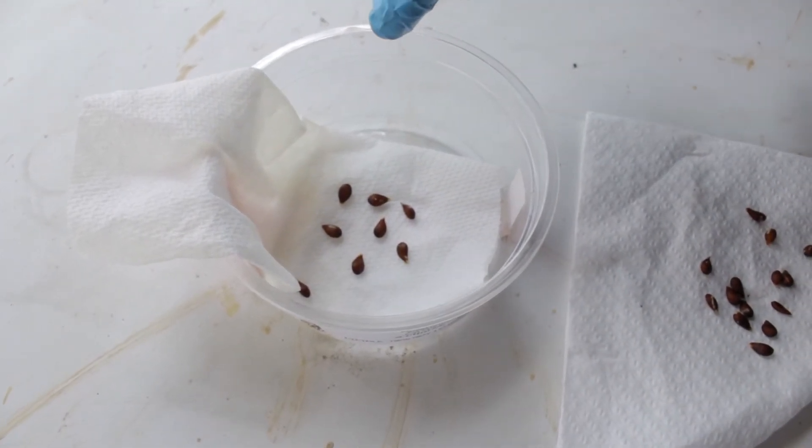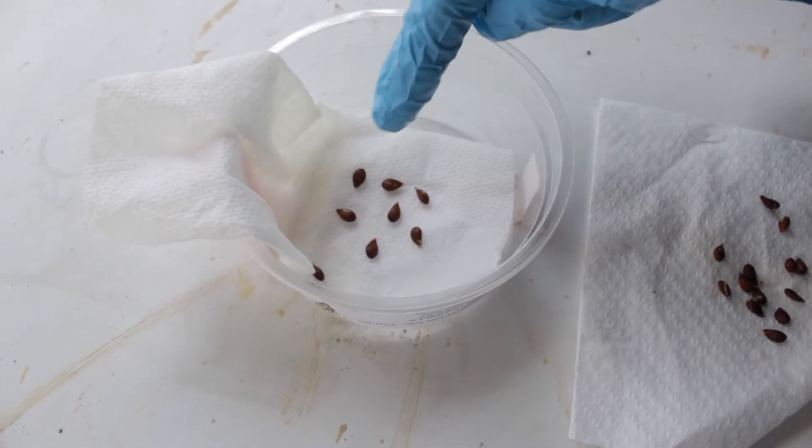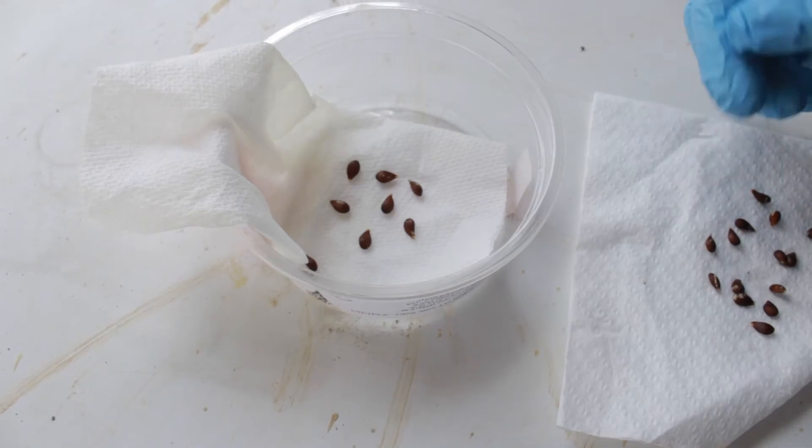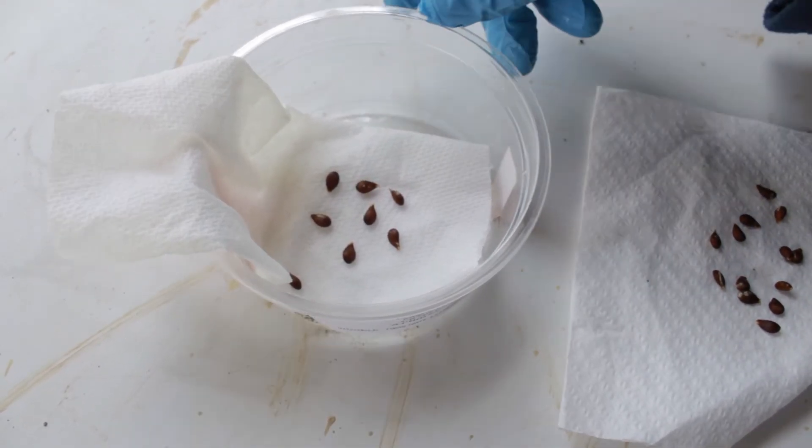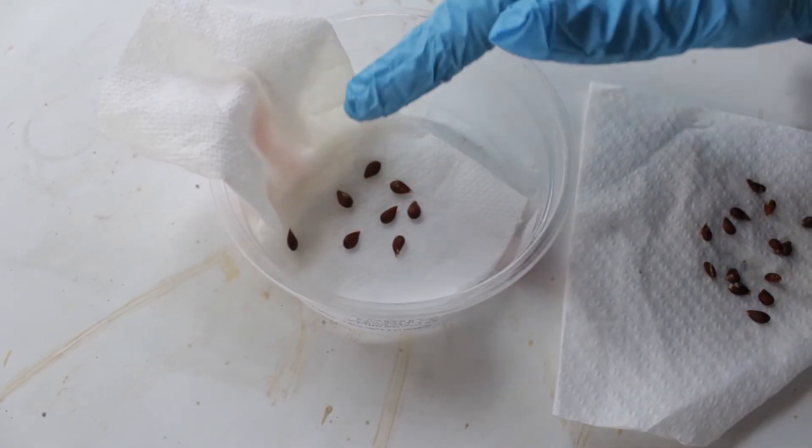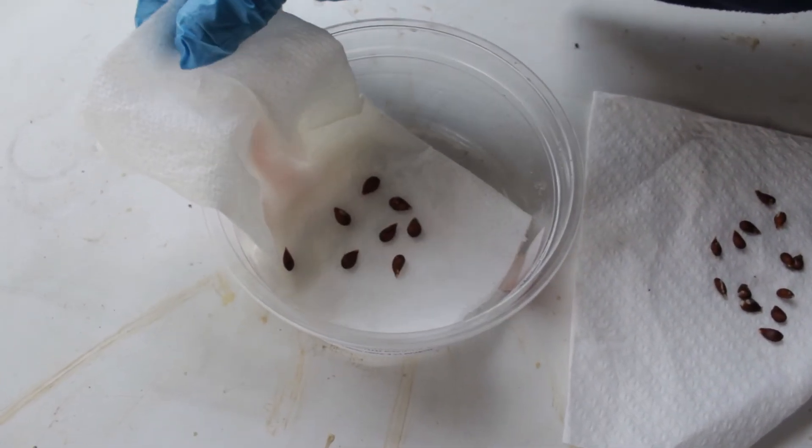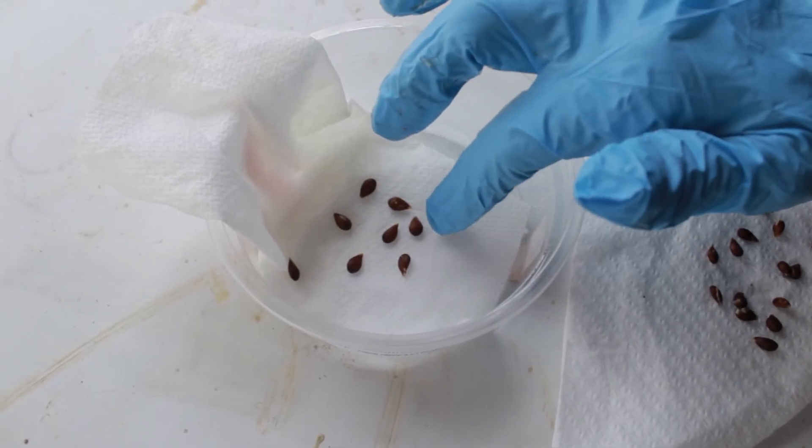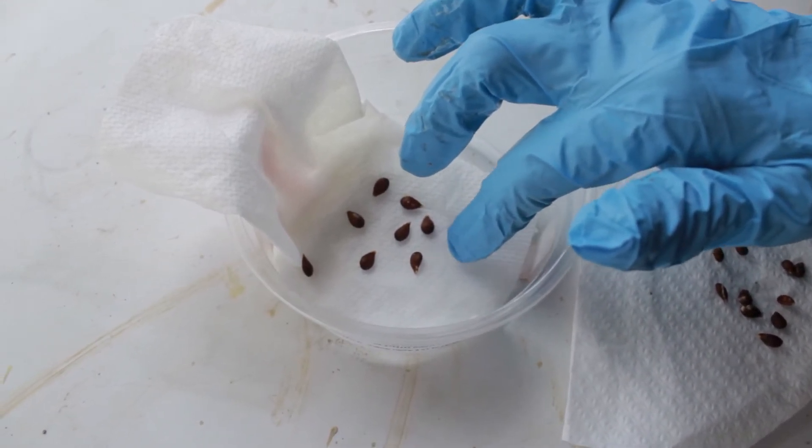So here we have eight. Eight should be fine. Now I'll just put some—this is a moist napkin and I'll put a little bit more water too, just a little bit to make it moist.